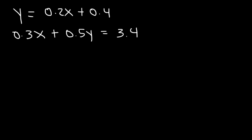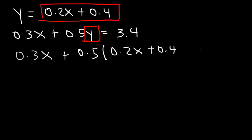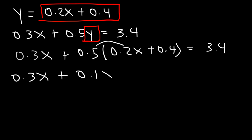So let's replace y with what it equals: 0.2x plus 0.4. So what we're going to have is 0.3x plus 0.5 times (0.2x plus 0.4), which is equal to 3.4. Now let's distribute 0.5. 0.5 times 0.2 equals 0.1, so we have 0.3x plus 0.1x. And then 0.5 times 0.4 is 0.2. All of this equals 3.4.